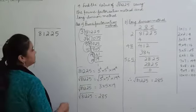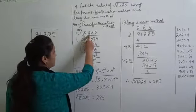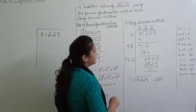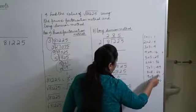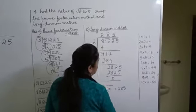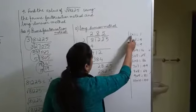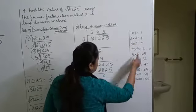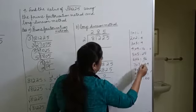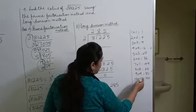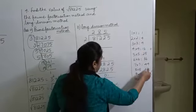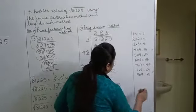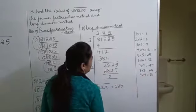Now let's find the square root of the same number using the long division method. Remember that you can only use perfect square products in this method: 1×1=1, 2×2=4, 3×3=9, 4×4=16, up to 9×9=81. You cannot go beyond 9×9=81.